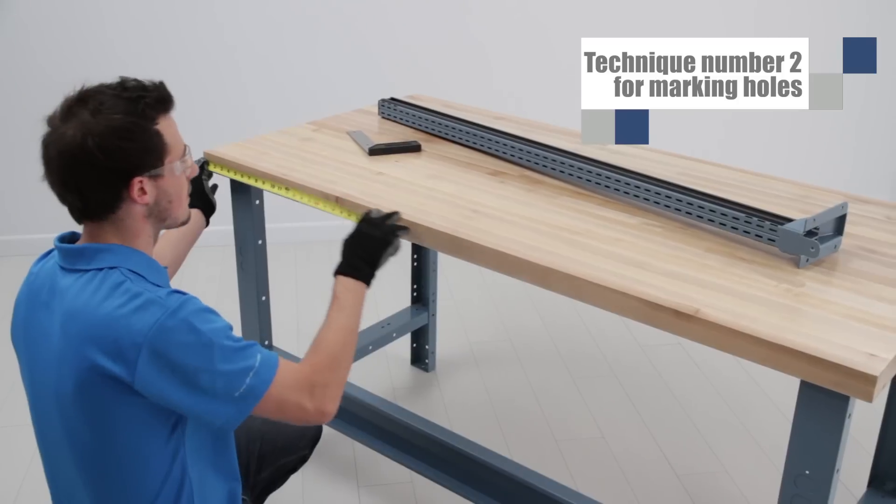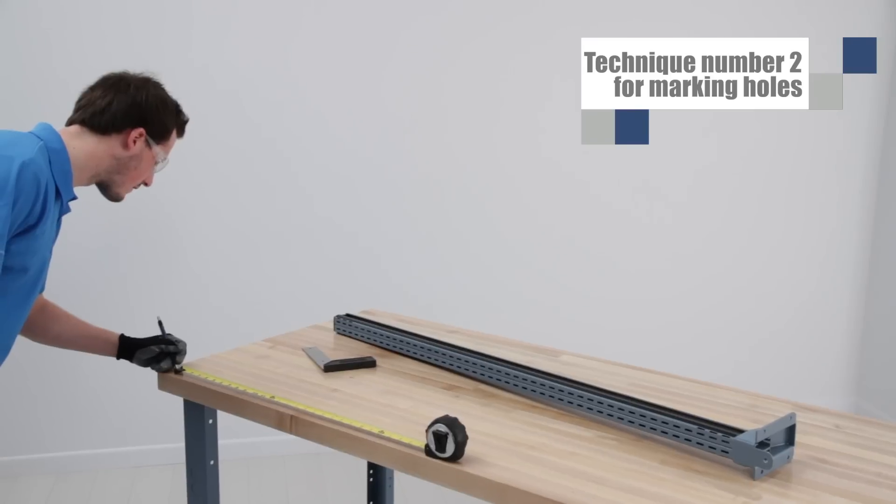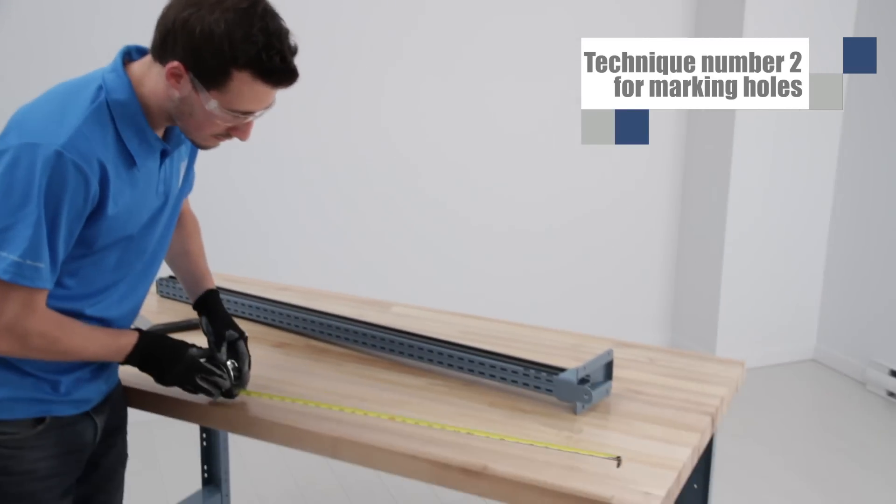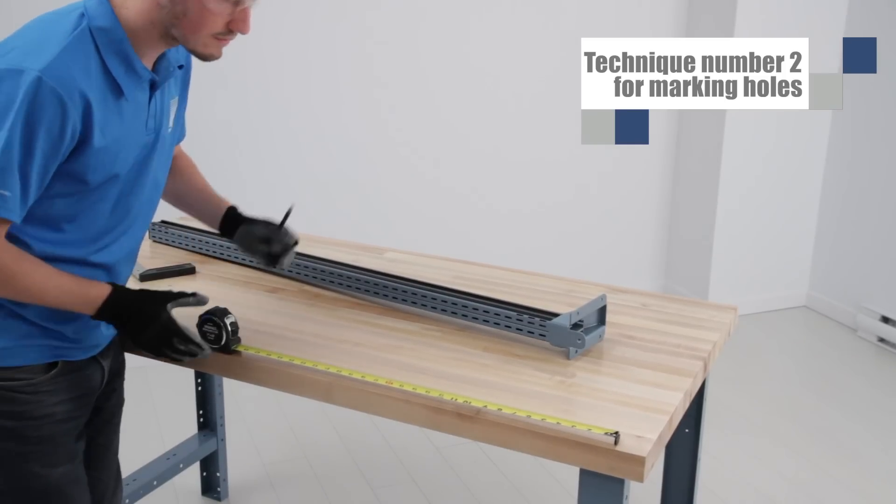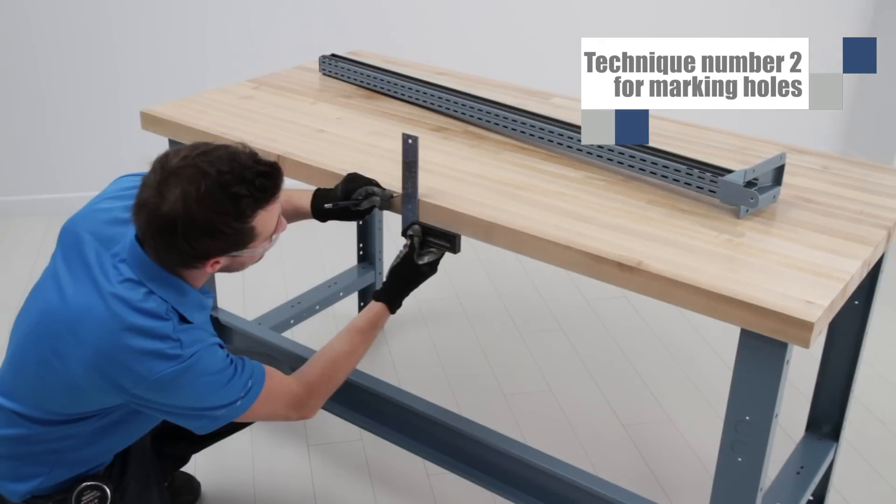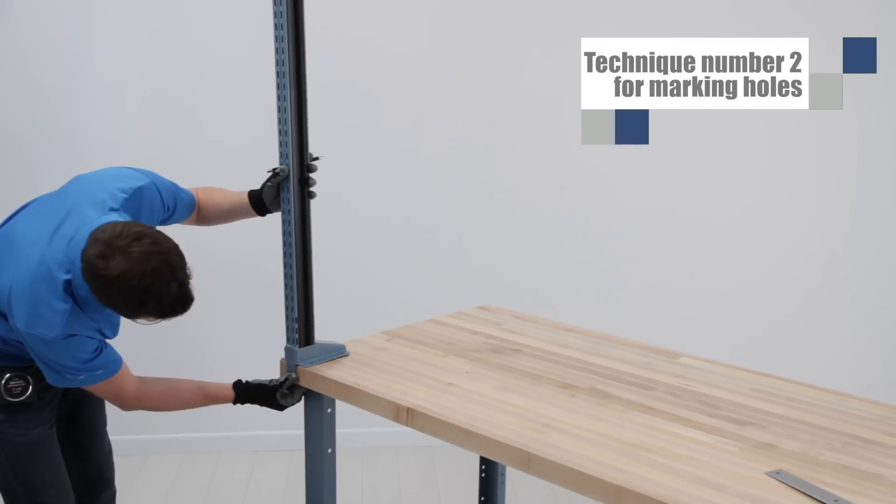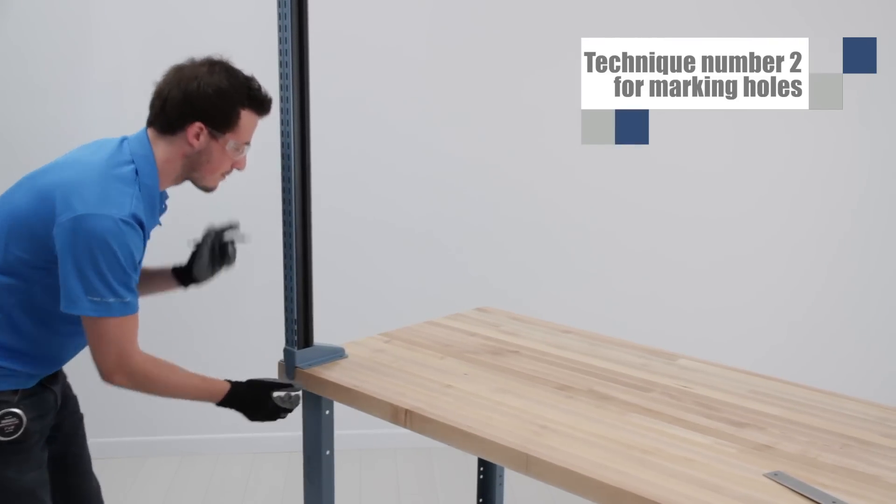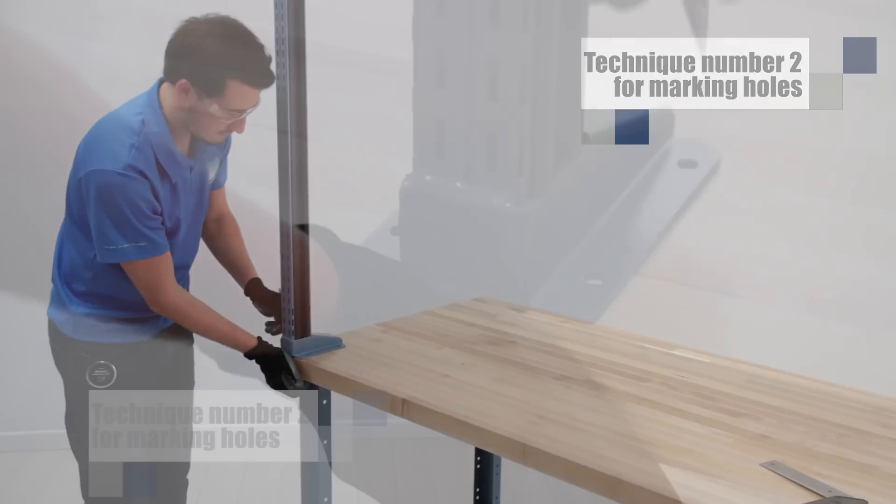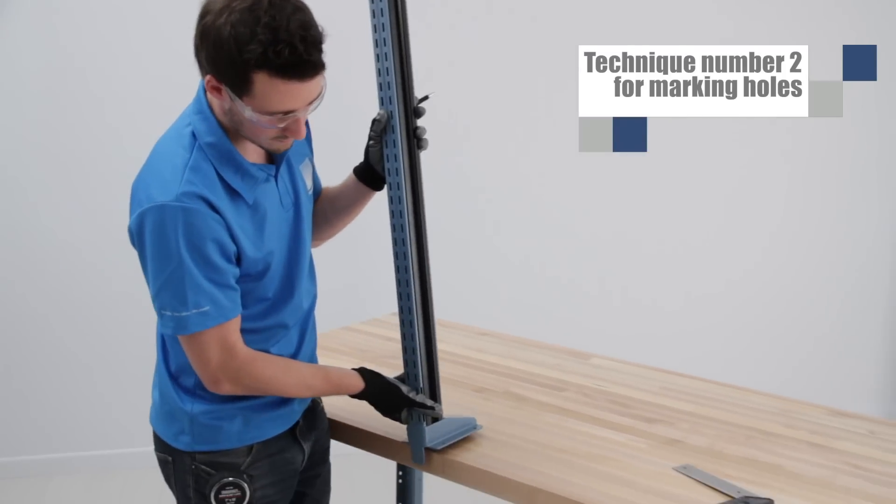If you don't have a template, the technique consists of first marking the center of the work table along the back edge of the work surface. You can then measure the distance and make additional marks according to the configuration you are using. In our case, the distance is 28 inches. Next, place your uprights and align the holes with the marks that you have made on the back edge of the work surface. Make sure that the upright is correctly positioned before marking the holes. Repeat the same operation for all of the uprights that need to be installed.